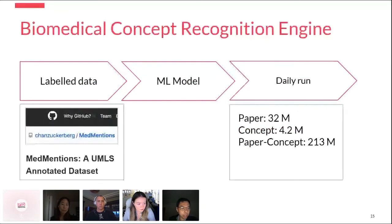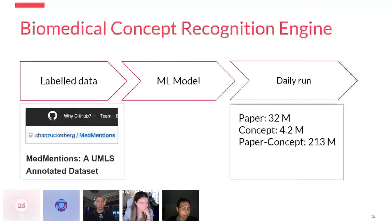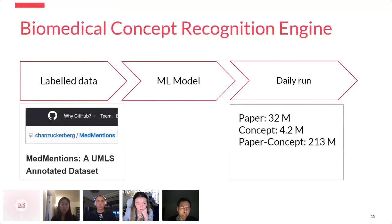To develop the concept recognition engine, we first created a human-labeled dataset called MedMentions and then trained an ML model. We apply this to process new papers ingested into our knowledge graph on a daily basis. As many of you know, PubMed assigns MeSH terms to papers, but this is a manual process that often takes several weeks or months due to the huge number of publications. With the concept recognition engine, we're able to do this in almost real time on a daily basis — on average about four weeks earlier than the standard assignment process.